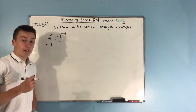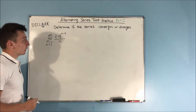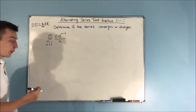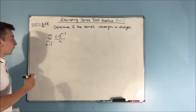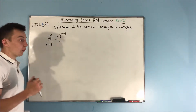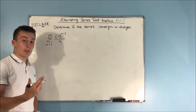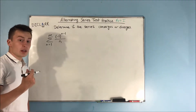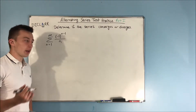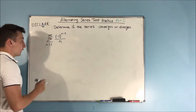This video is going to be part one of our alternating series test practice. We want to determine if the series converges or diverges. We have the sum from n equals one to infinity of negative one to the n minus one, all over n. This is also known as the alternating harmonic series. We know that the regular harmonic series diverges, but you're going to see something different happen with the alternating harmonic series.